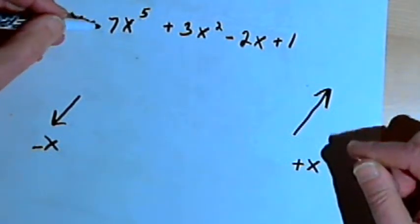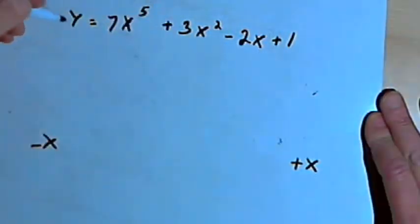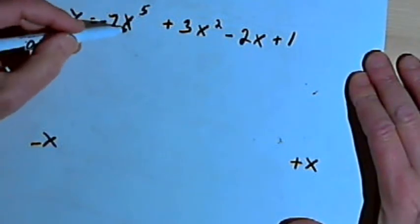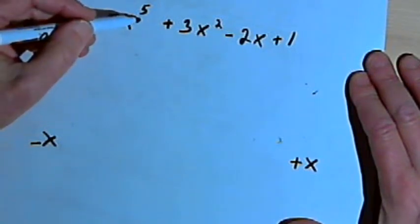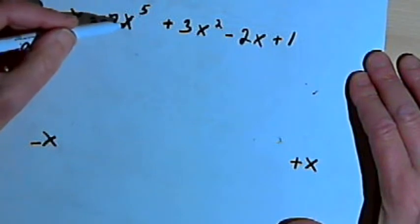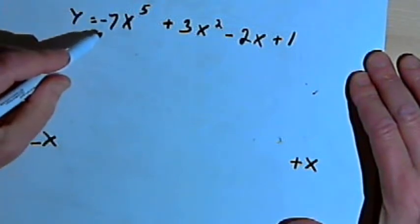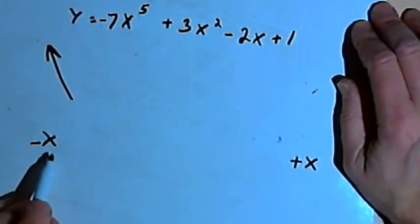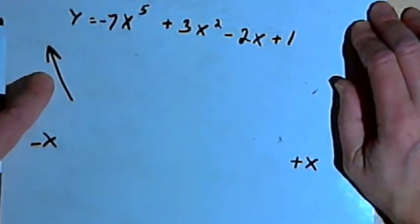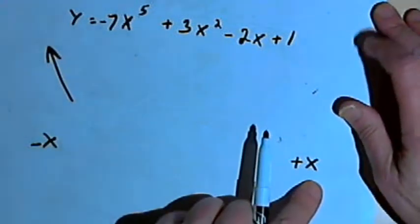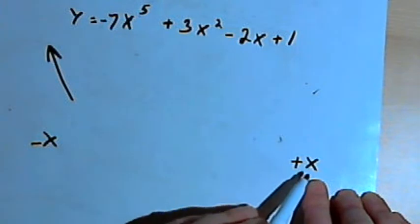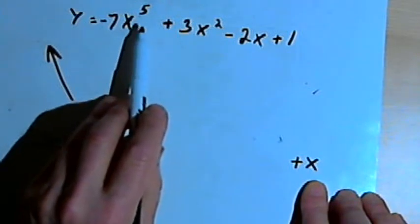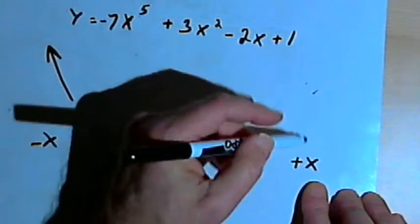This will get flipped if I make the coefficient negative. So with negative 7x to the fifth, at the left end I have negative x values raised to an odd degree — still negative — but multiplied by a negative coefficient, so they become positive. At the left end, as x becomes more and more negative, y becomes more and more positive. At the right end, positive x values raised to an odd degree are still positive, but multiplied by a negative coefficient they become negative.